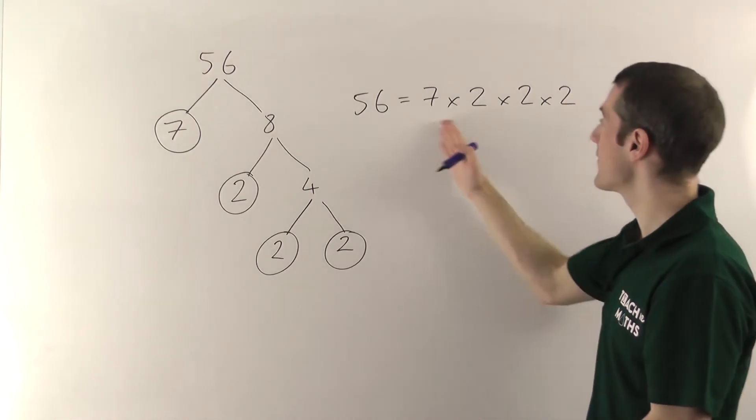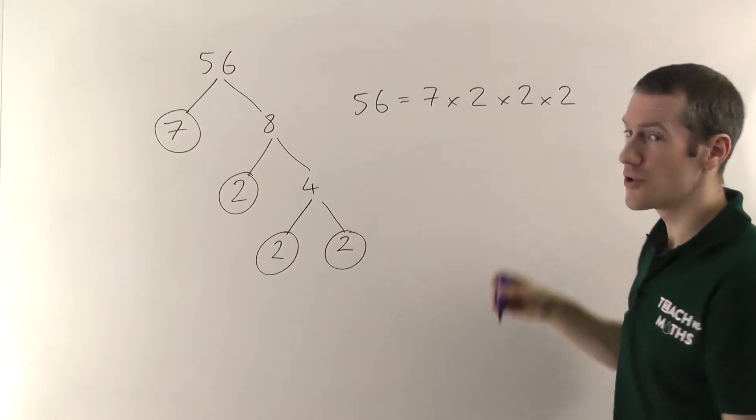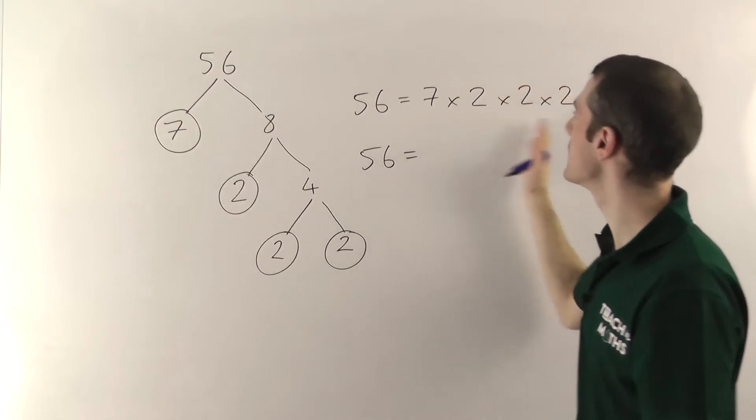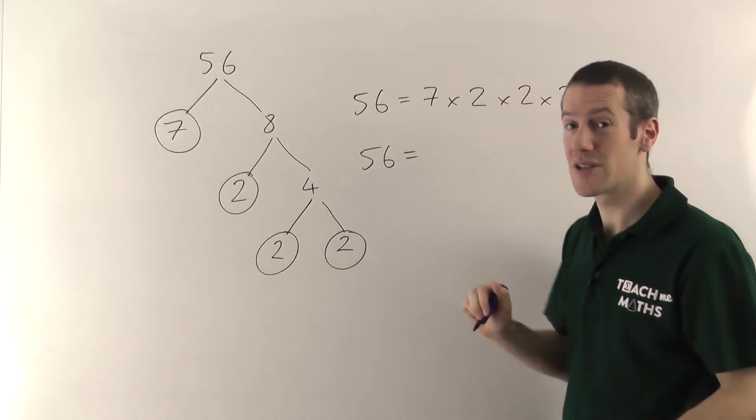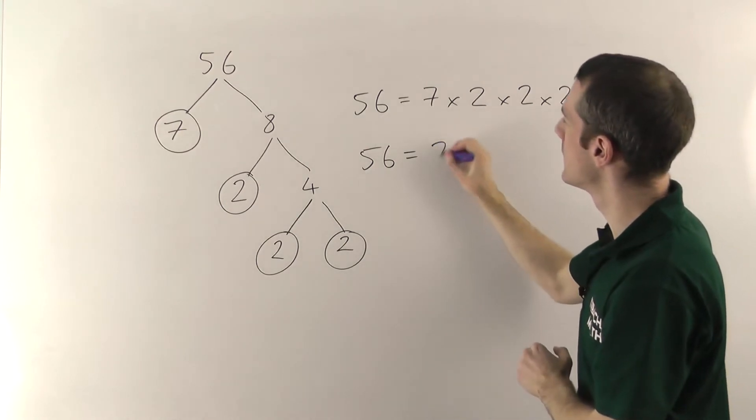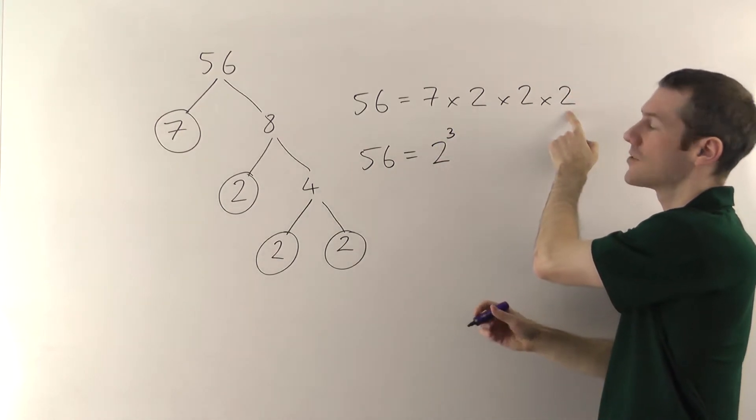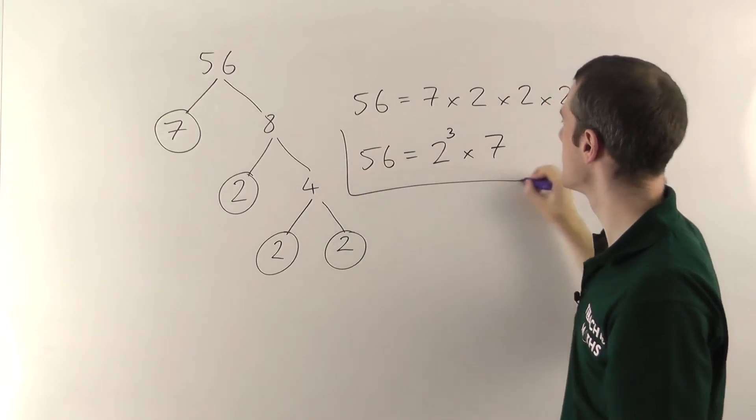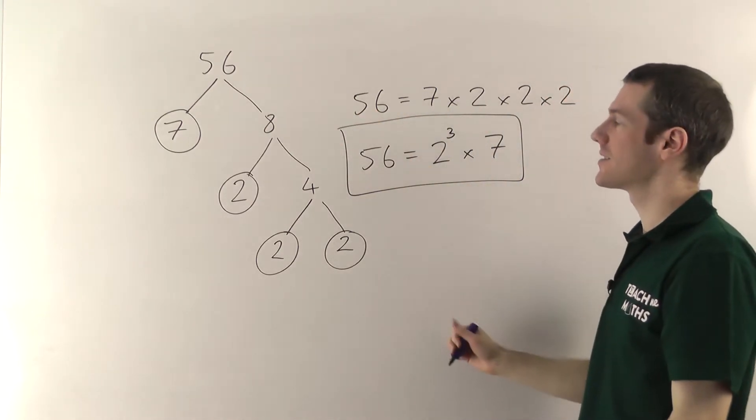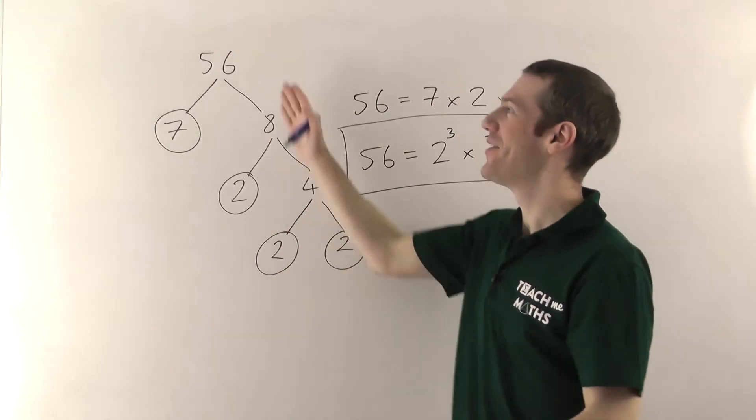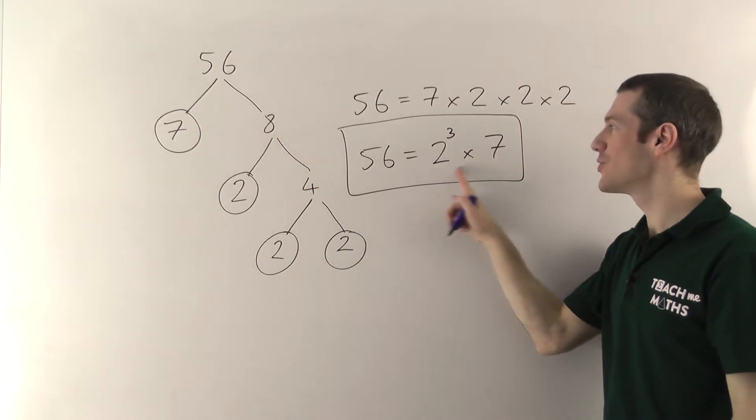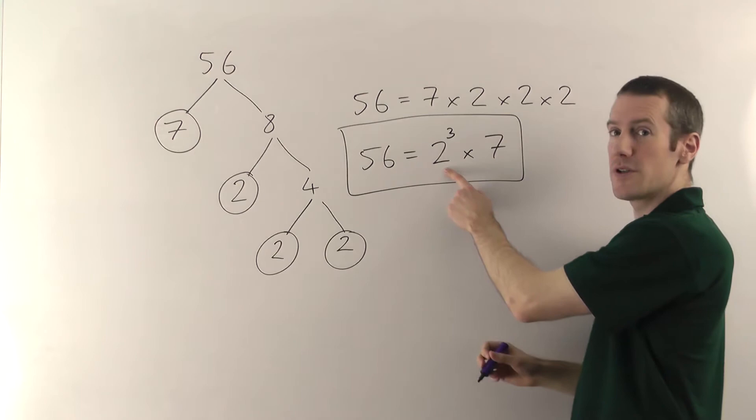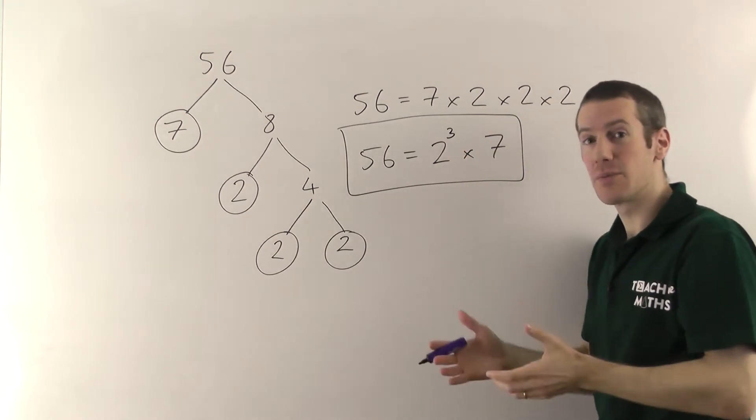However, what you should do having got this, is then instead of writing 2 times 2 times 2, you should write it with powers. So 56, the proper way that you should write this, and in fact you usually start with the smallest numbers first, is going to be 2 cubed. Yeah, 2 times 2 times 2 is 2 cubed, and then we're timesing it by 7. So that would be the answer to the question. So if you're asked to give the prime factor decomposition of 56, you have to write 2 cubed times 7. So you do your tree thing, work out what all the numbers are, and then put the smallest ones first, and the power tells you how many of them are multiplying together.